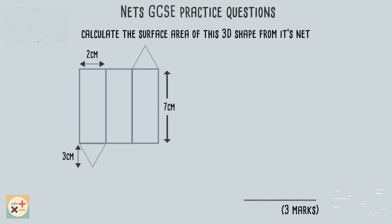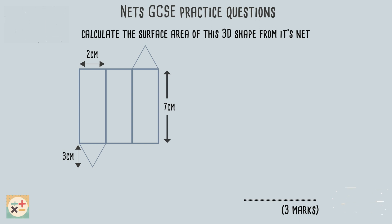For the third question we are asked to work out the surface area of the 3D shape by using its net. As we have three rectangular faces and two triangular faces, we can work these out individually first, then add them all together to find the total area. It may help to watch our video about compound shapes, linked above, if you need a recap.